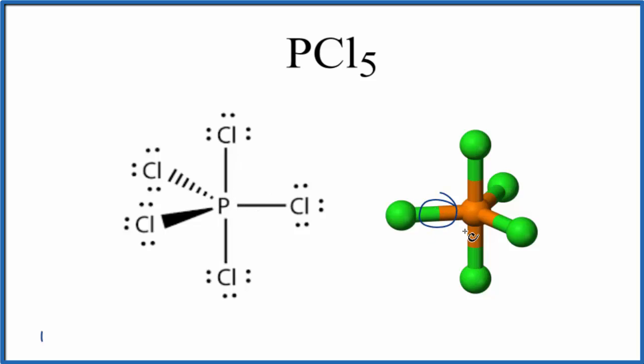Electrons are shared. We can see that over here. Electrons are shared to form the chemical bond between the phosphorus and the chlorine atom.